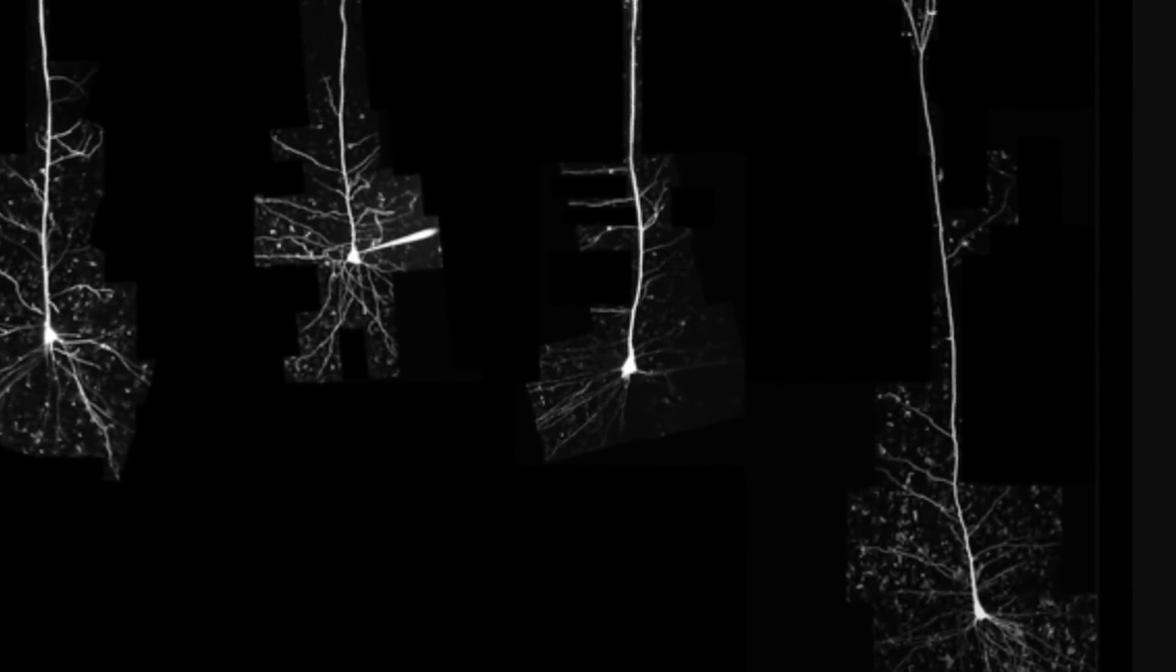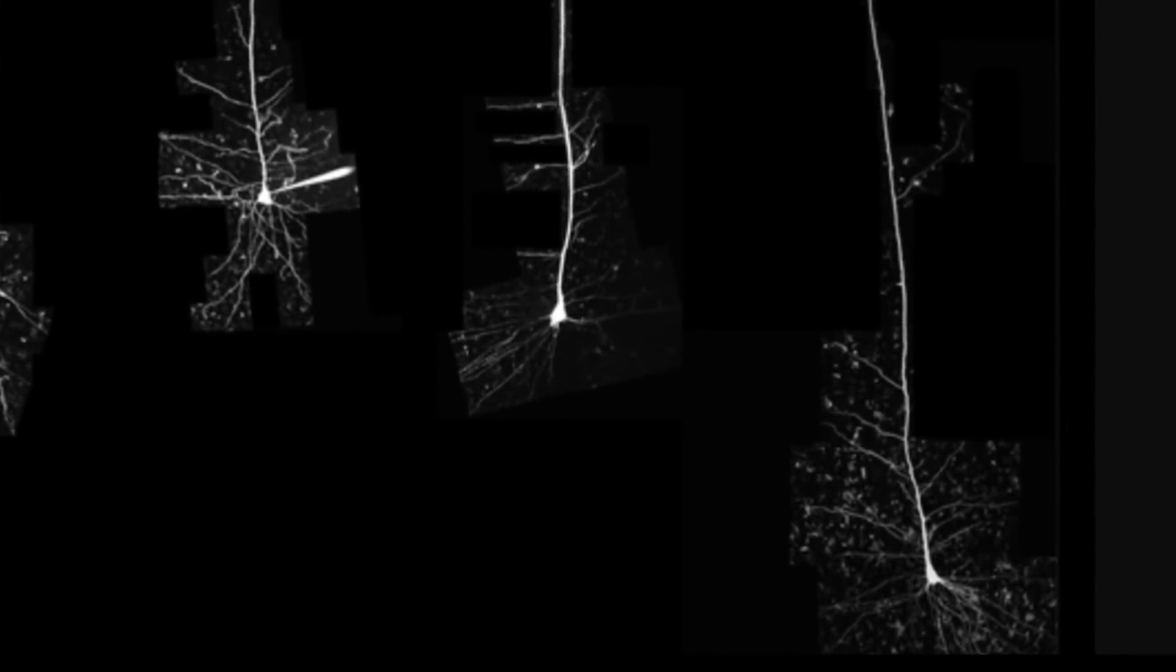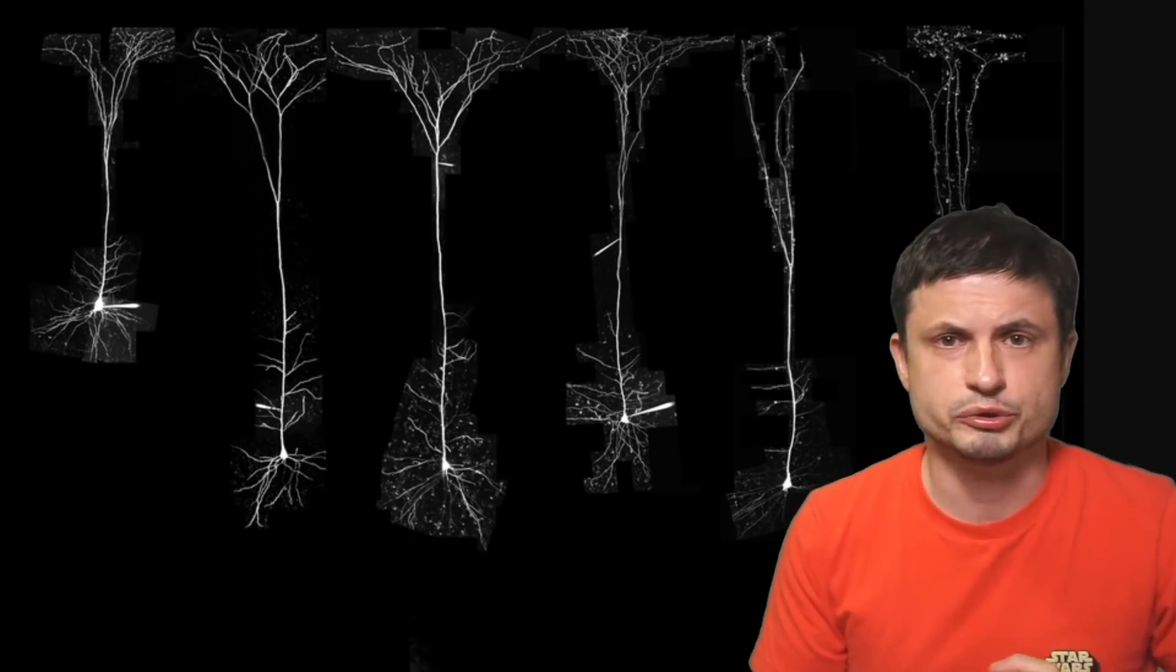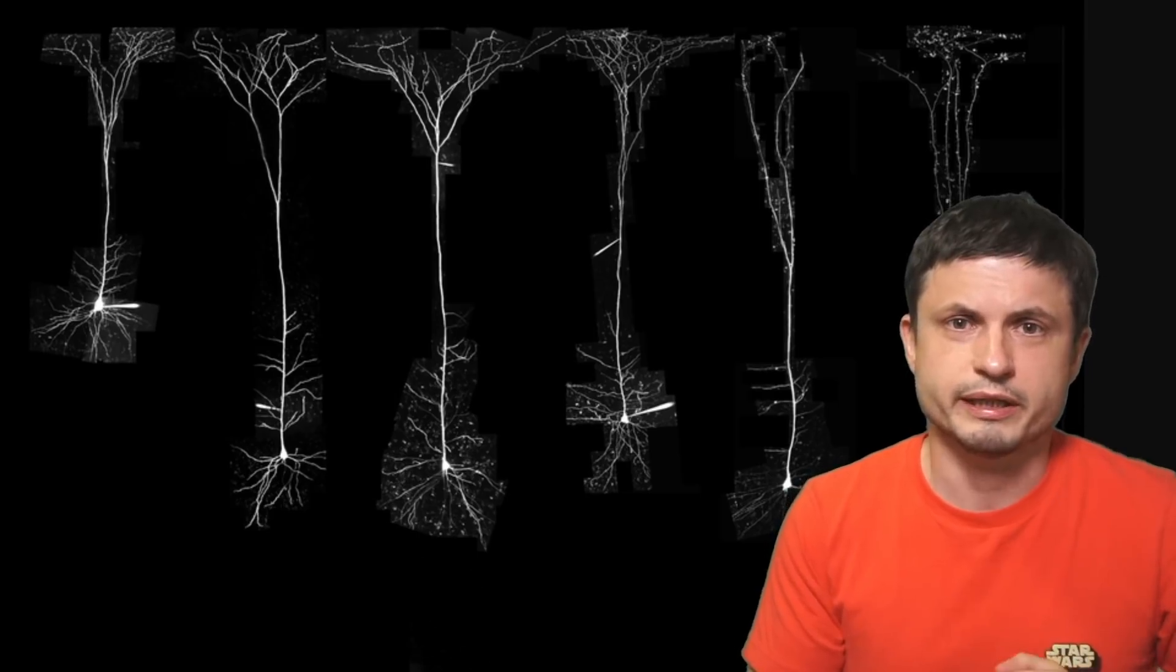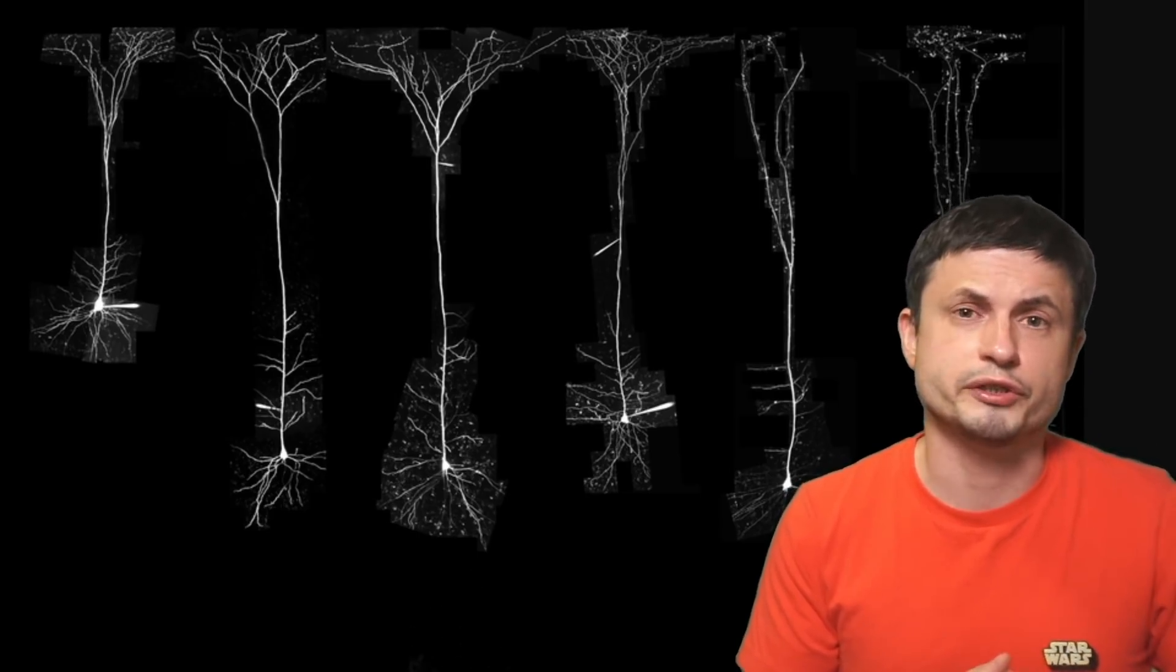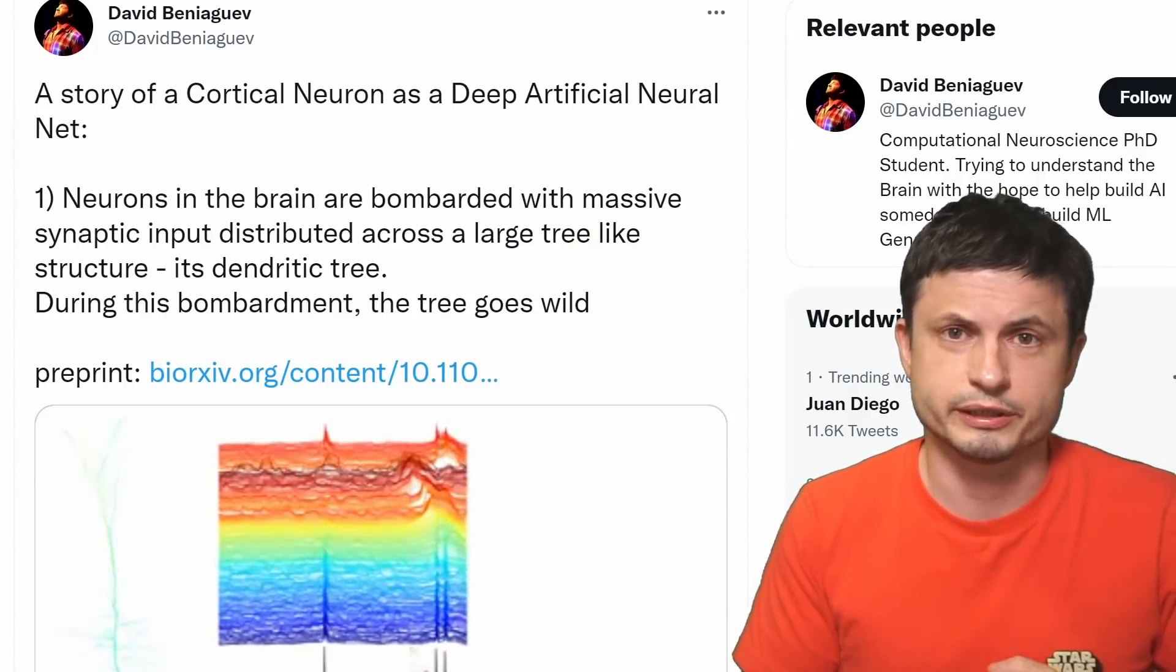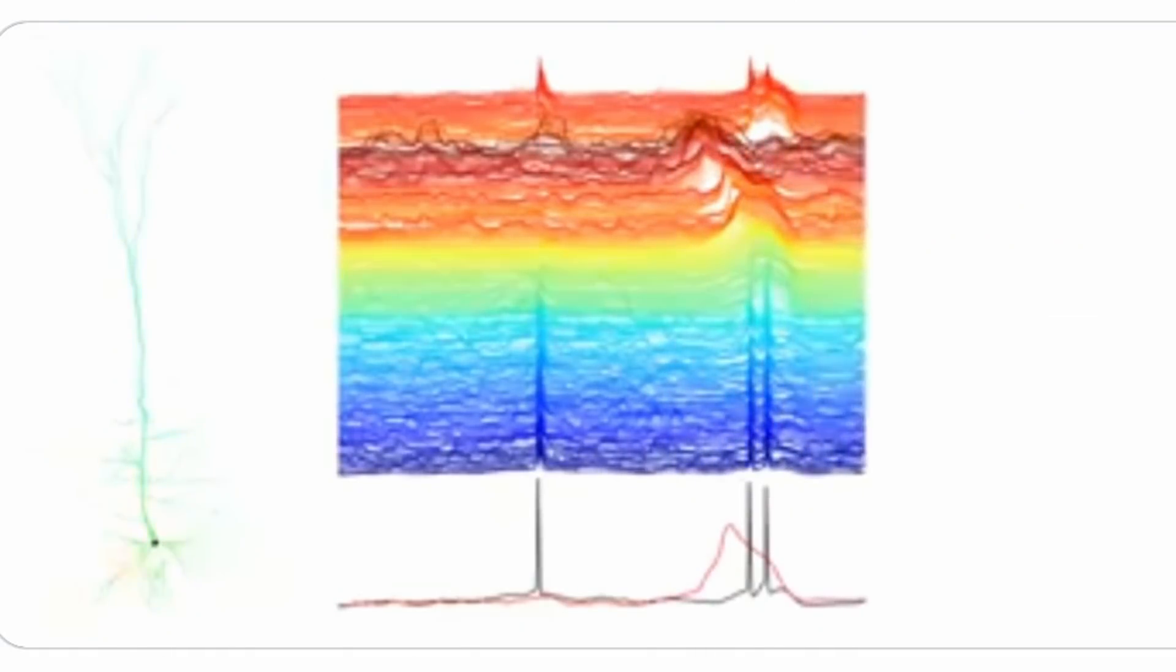This could be one explanation for why we were able to develop complex intelligence after all. But we'll actually discuss some other ideas about this in one of the future videos, so make sure to subscribe. Then we had this other recent study that focused on comparing machine learning to typical computations inside a human neuron, revealing once again that we underestimated how complex human neurons are.